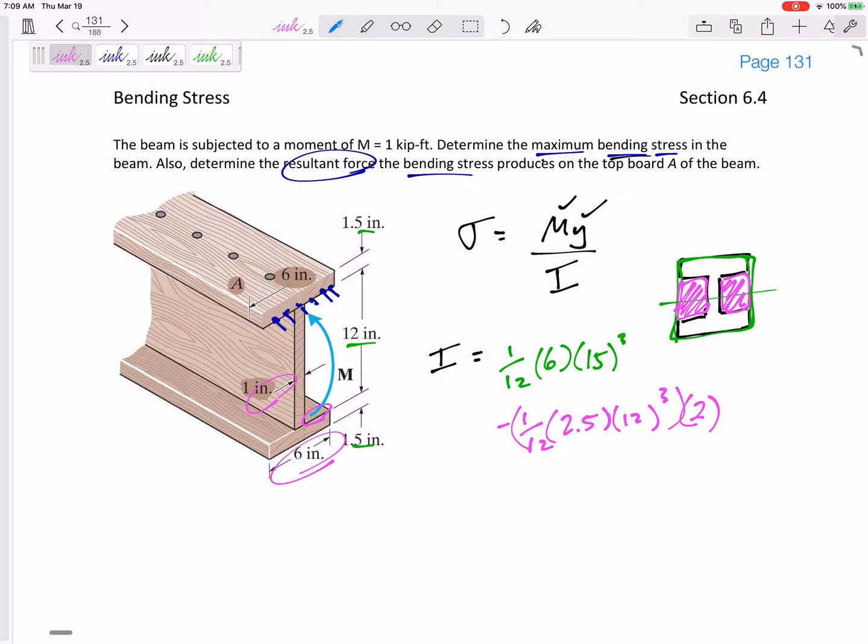And do you notice, we didn't have to use the parallel axis theorem because the middle of all of those shapes were down the middle of our beam. So that is one benefit for using this method of thinking about it as a solid rectangle minus these two areas that are cut out. Is that everything is about the neutral axis. Don't have to use the parallel axis theorem. Alright, so I've got I, 967.5 inches to the fourth.